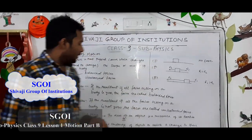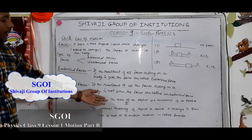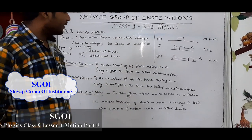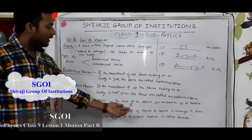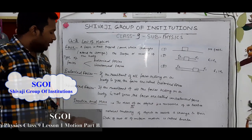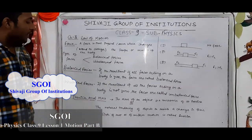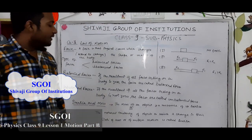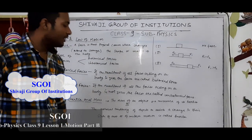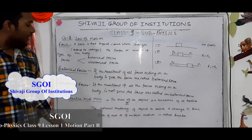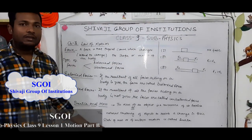Now let's see what is inertia. The mass of an object is the measure of its inertia. The natural tendency of an object to resist a change in its state of rest or uniform motion is called inertia.